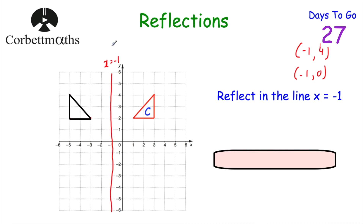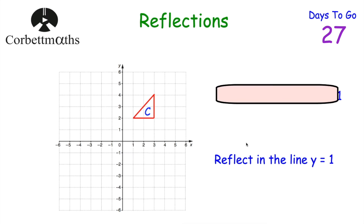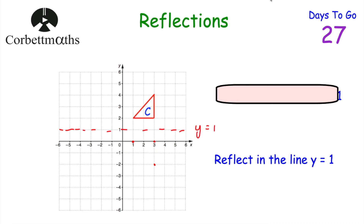Now let's look at reflecting triangle C in the line y = 1. This is a horizontal mirror line — all points with a y-coordinate of 1. For each corner of the triangle, I measure how far it is above or below the mirror line and place the reflected point the same distance on the other side. Joining up the three new points gives us the reflection of C in the line y = 1.